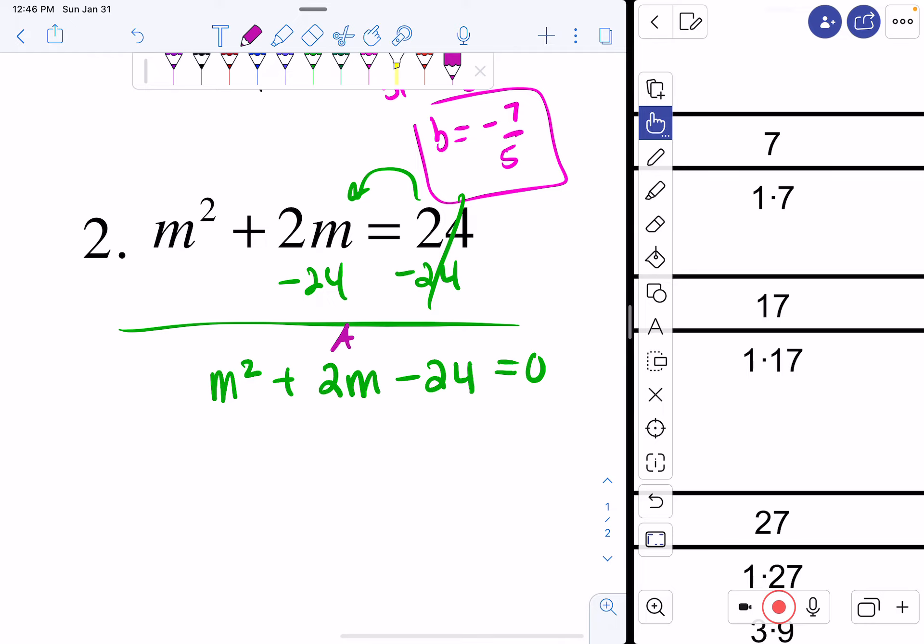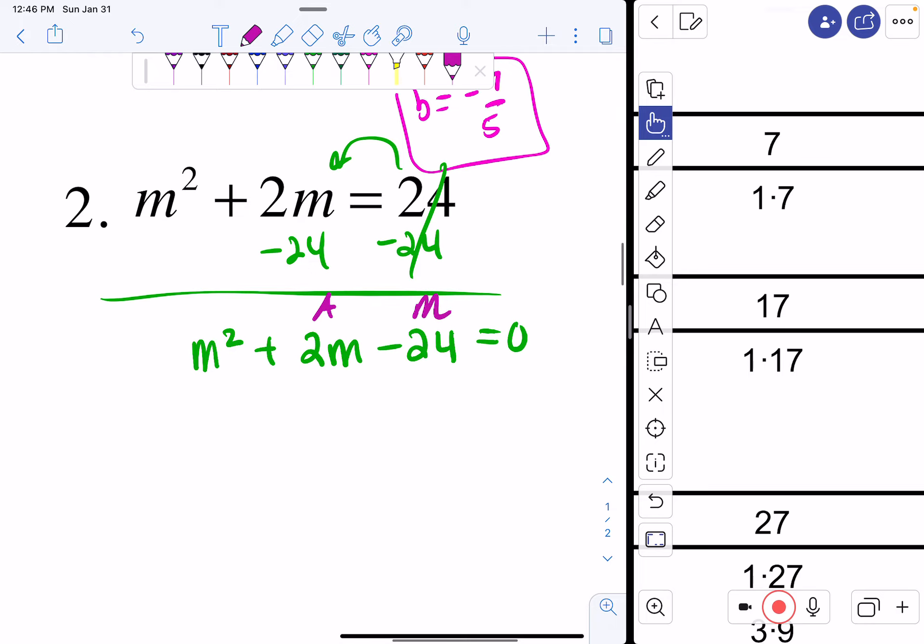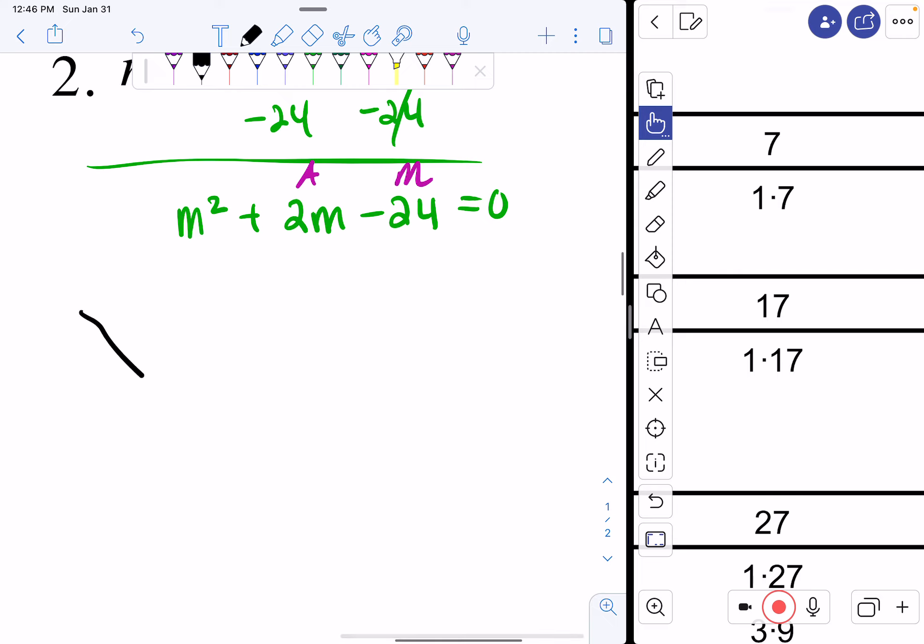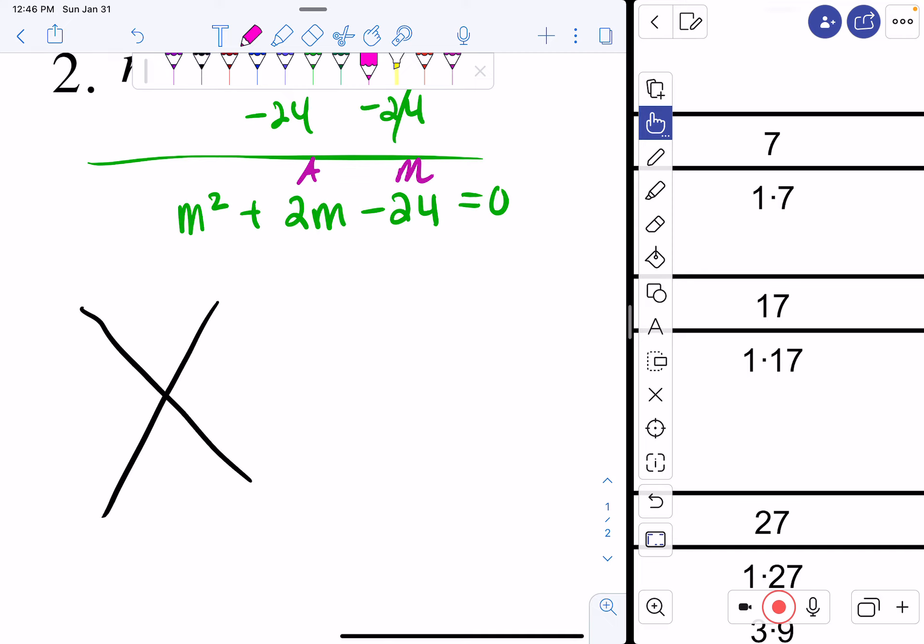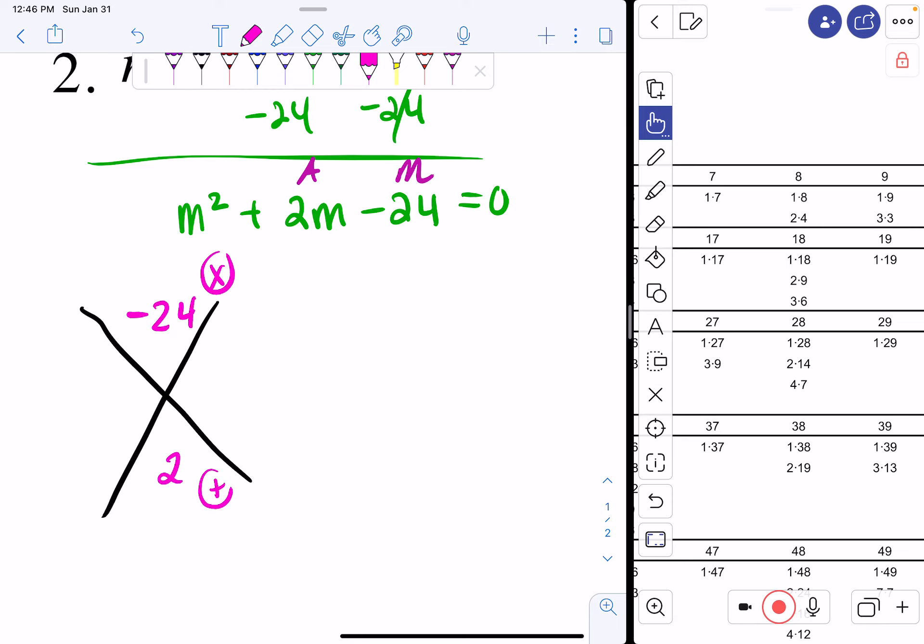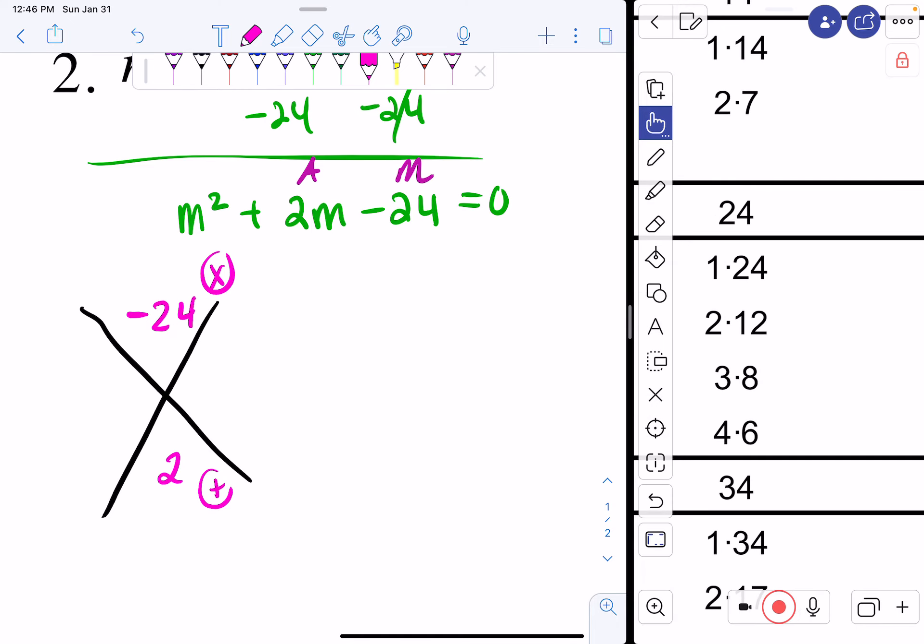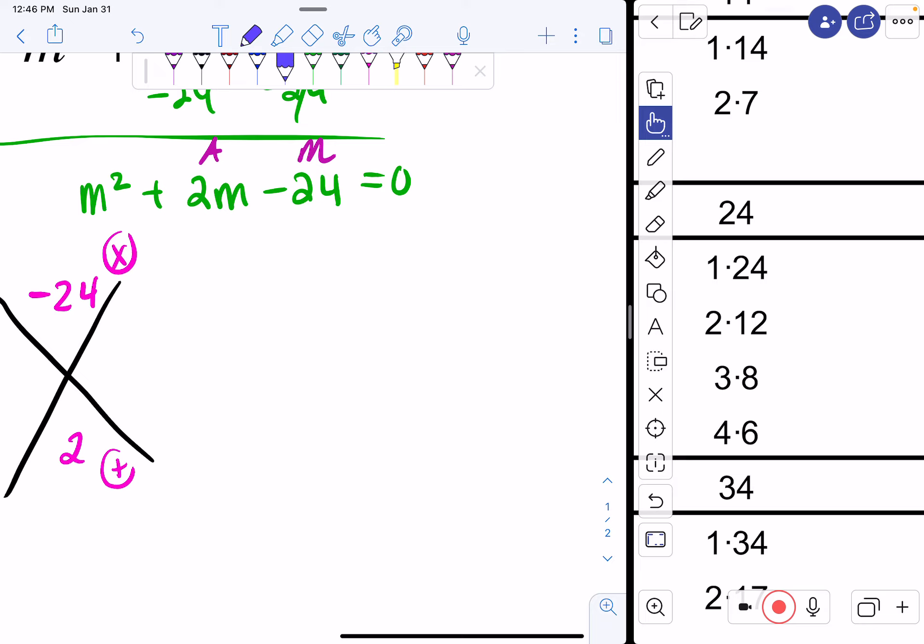I want to add up to 2 and multiply to a negative 24. So I'm going to draw my diamond. Put my negative 24 upstairs because that's what I want to multiply to and my positive 2 downstairs because that's what I want to add to. I go to my factor pair sheet and I rewrite all these combinations. I have 1 and 24, 2 and 12, 3 and 8, and 4 and 6.